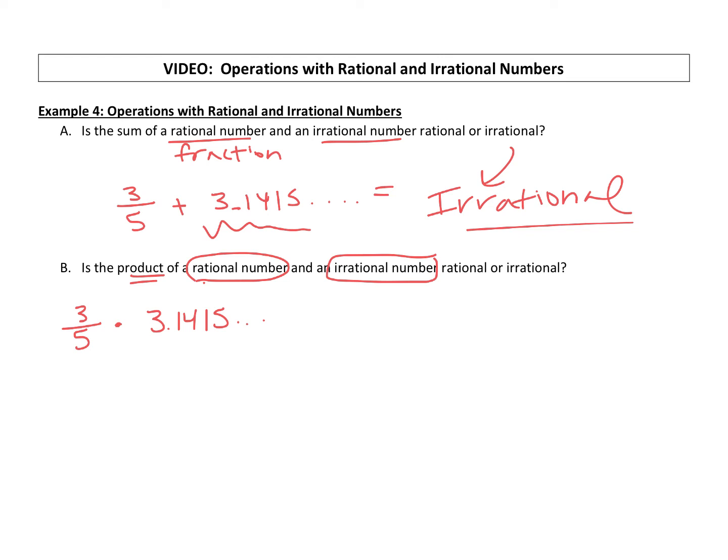And it follows the same logic as above. Because this is irrational and cannot be expressed as a fraction, the product of these two will not be a fraction. So if you multiply a rational number, a fraction, with an irrational number, you will get an irrational answer.